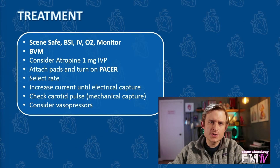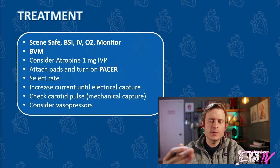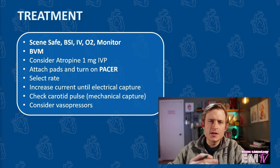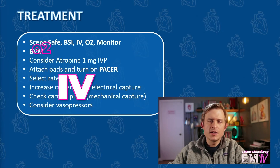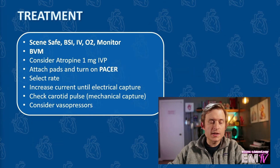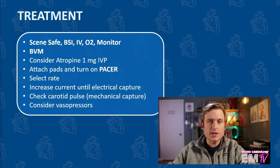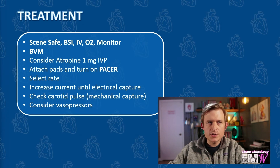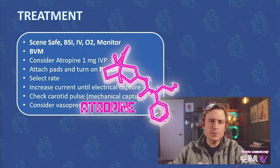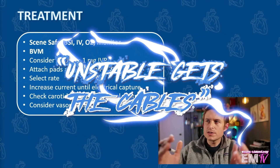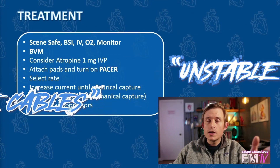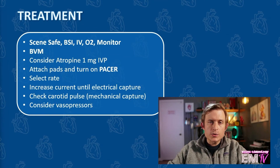Just like with all my other static cardiology cards, I'll begin the treatment by reciting the mantra: scene safe, BSI, IV, O2, monitor. The next thing I'll mention is that I'm going to ventilate this patient with a BVM as her respiratory rate is only 5. Because this patient is bradycardic, I'll then consider atropine 1mg IV push. But as the old saying goes, unstable gets the cable — more definitive treatment here is going to involve transcutaneous pacing.